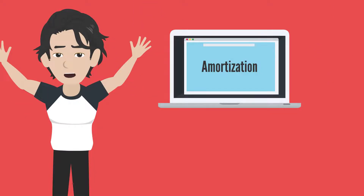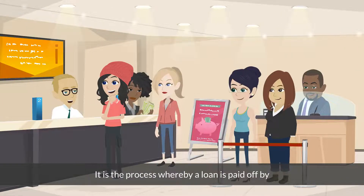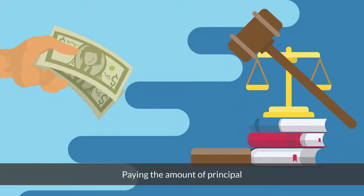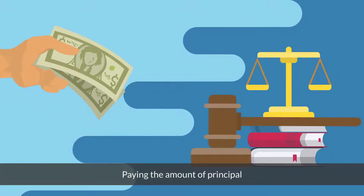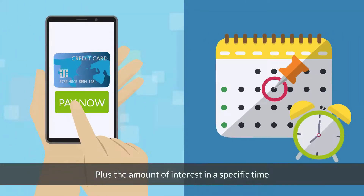So what exactly is amortization? It is the process whereby a loan is paid off by paying the amount of principal plus the amount of interest in a specific time.